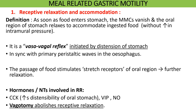Receptive relaxation is the mechanism by which the stomach receives and accommodates the food that you eat. It is a vasovagal reflex which is initiated by the distension of the stomach and it is synchronized with primary esophageal peristalsis. As soon as the entry of food stimulates the oral region stretch receptors, a signal is sent to the lower esophageal sphincter to relax and open so that food can pass easily into the stomach. Removal of the vagus nerve will abolish receptive relaxation.